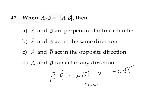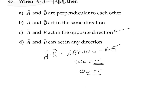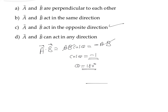This indicates that the value of cos theta is minus 1. Cos theta equals minus 1 when theta is equal to 180 degrees. That means the a vector and b vector are in opposite directions, and that is why the angle between a vector and b vector is equal to 180 degrees.